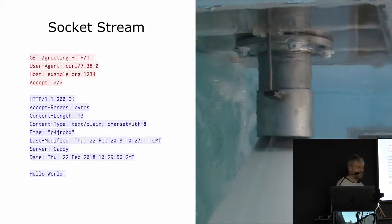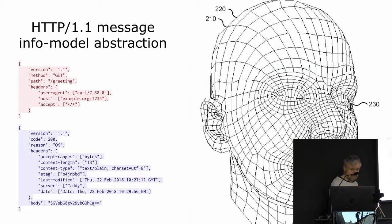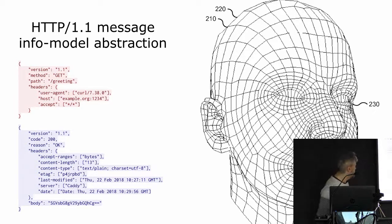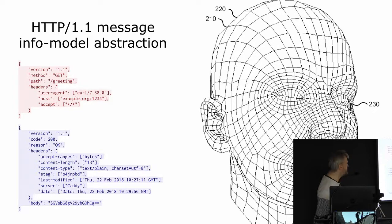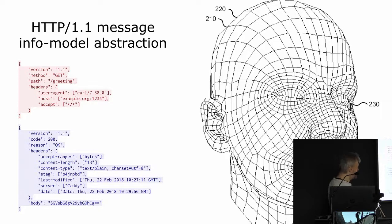In order to talk about HTTP/2, we need to move one additional abstraction level up and really talk about the abstract information model of HTTP messages. I'm representing an example of the information model in JSON, but this is not the actual syntax — it's just a notation you're familiar with to describe a data structure.